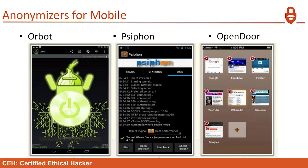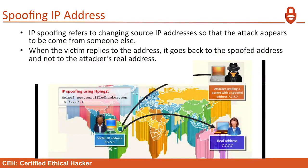You want to be careful with those. IP spoofing refers to changing the source IP address so that the attack appears to be coming from someone else. You're going to send a packet, but you won't be able to get that packet back, because it's going to go back to the victim — the spoofed IP address. When the victim replies, it goes back to the spoofed address and not to the attacker's real address.